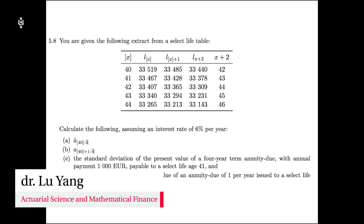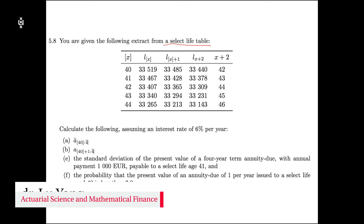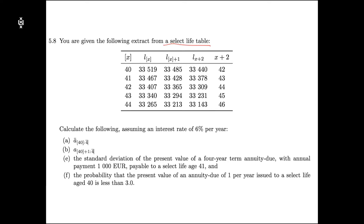In exercise 5.8, we are given a select life table and the interest rate. Based on that, we need to calculate a few things about annuity. In part A, we are going to calculate the expected present value of a term annuity due.